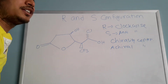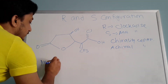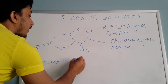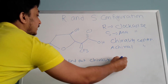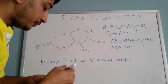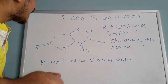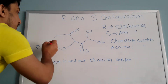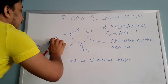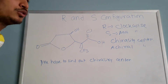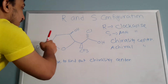Let's talk about this molecule and find out how many chirality centers there are. The first thing you have to do is find out your chirality centers. If there is a double bond, there is obviously no chirality center. For example, this carbon has no chirality center because there is a double bond — two of the bonds are going to be the same, so this carbon is not a chirality center.